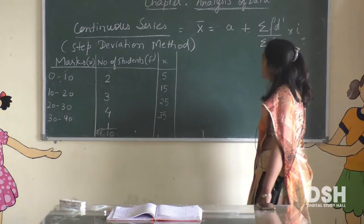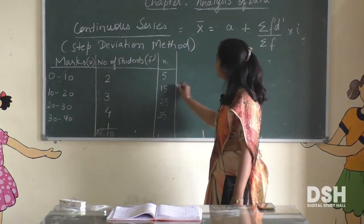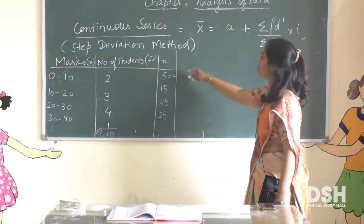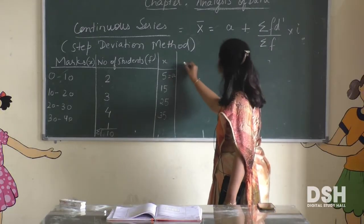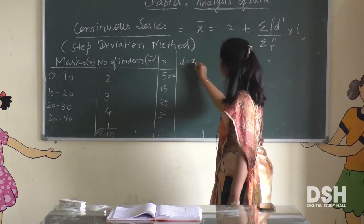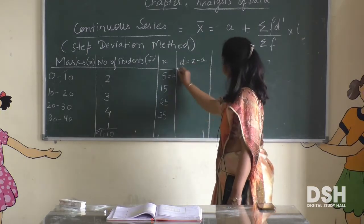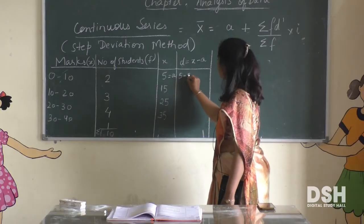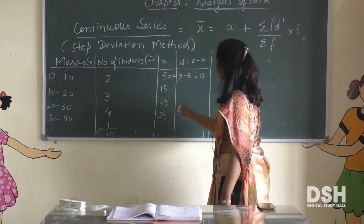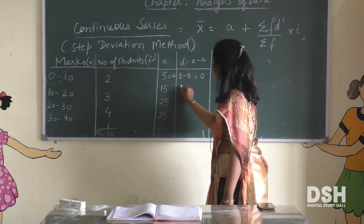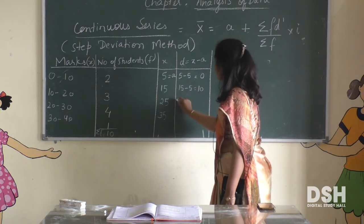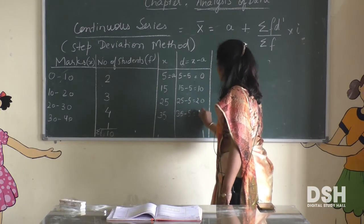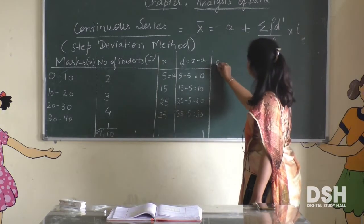Next, take any value as assumed mean A — here A = 5. Find d = x minus A: 5−5=0, 15−5=10, 25−5=20, 35−5=30.